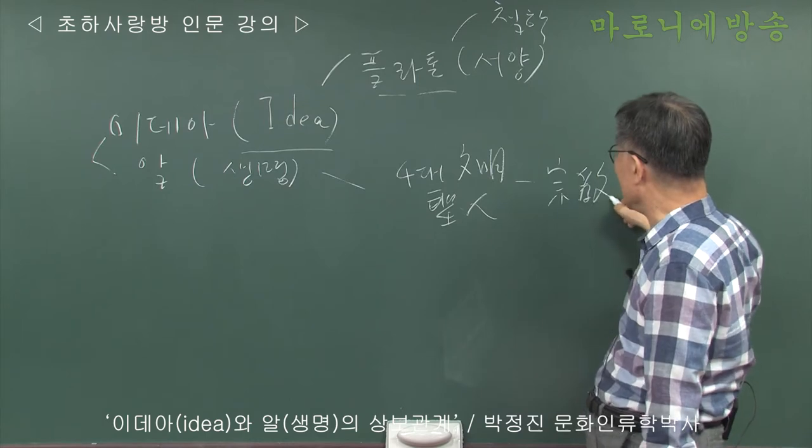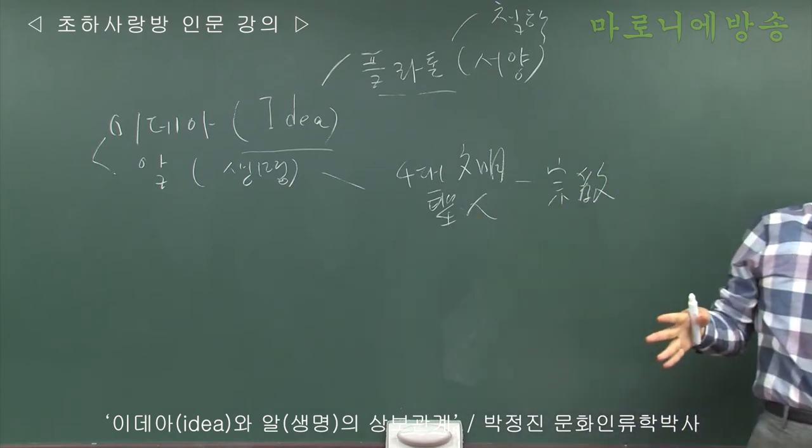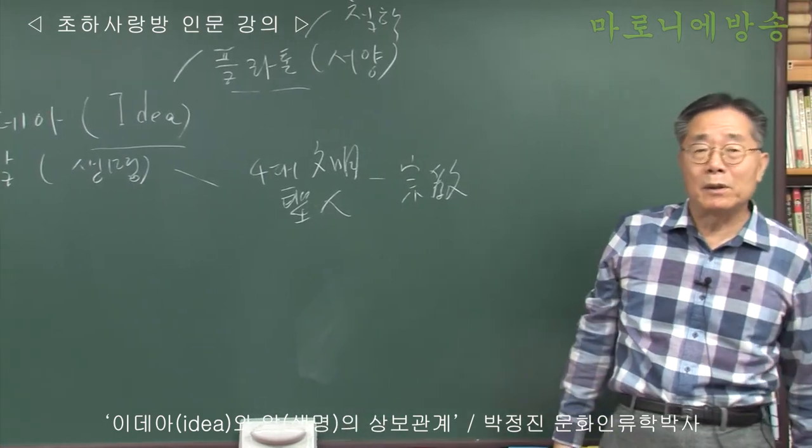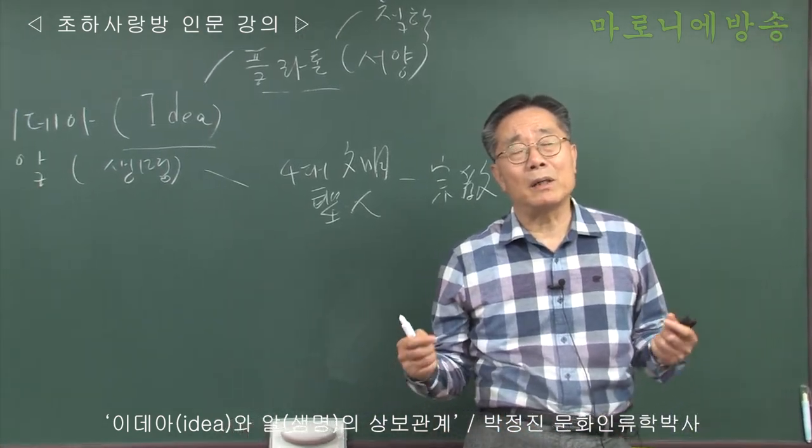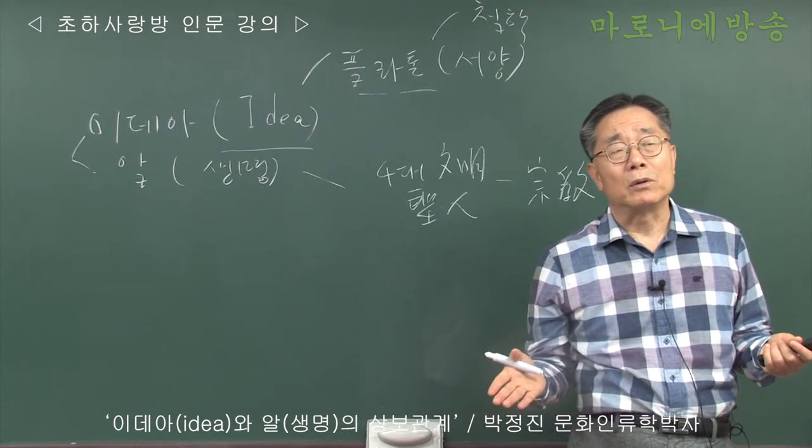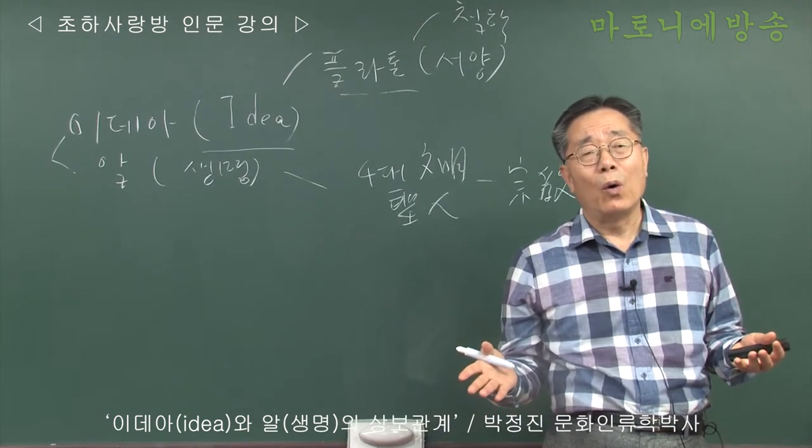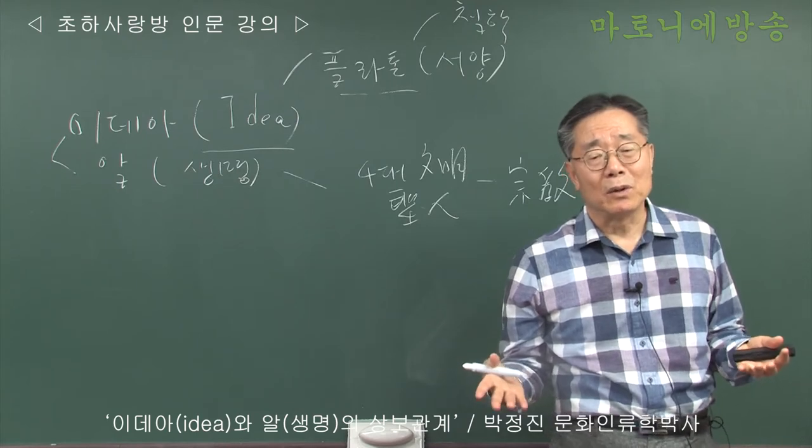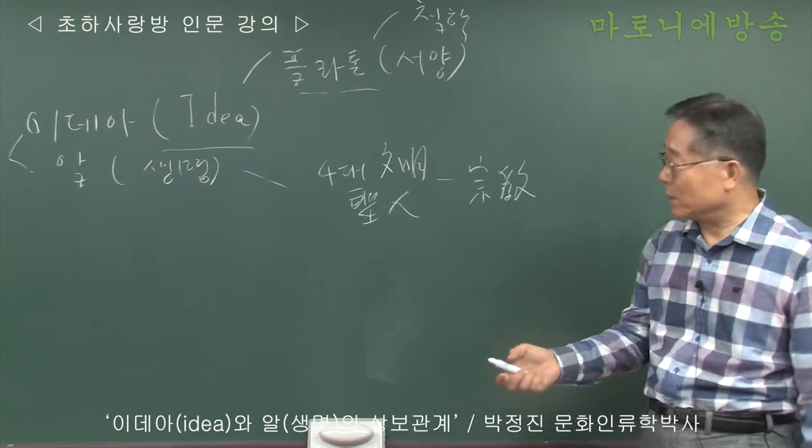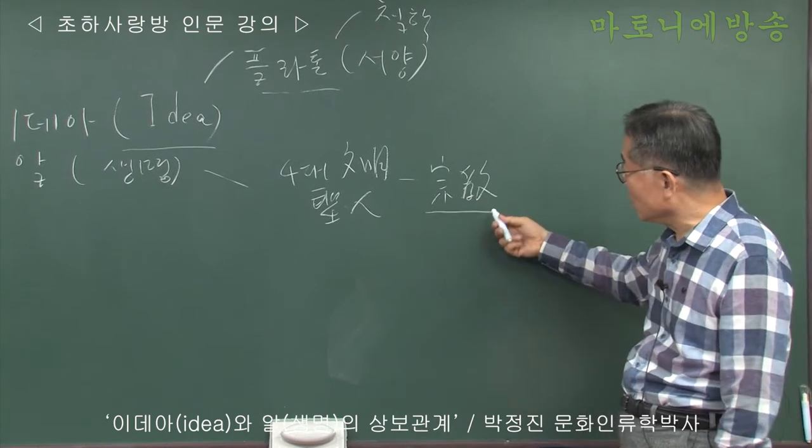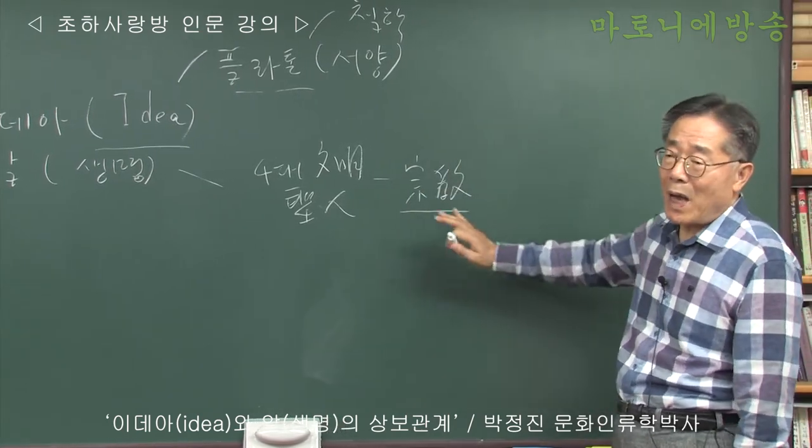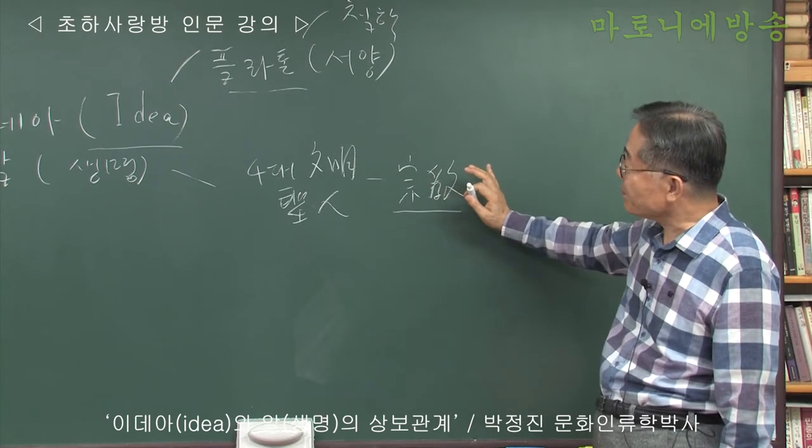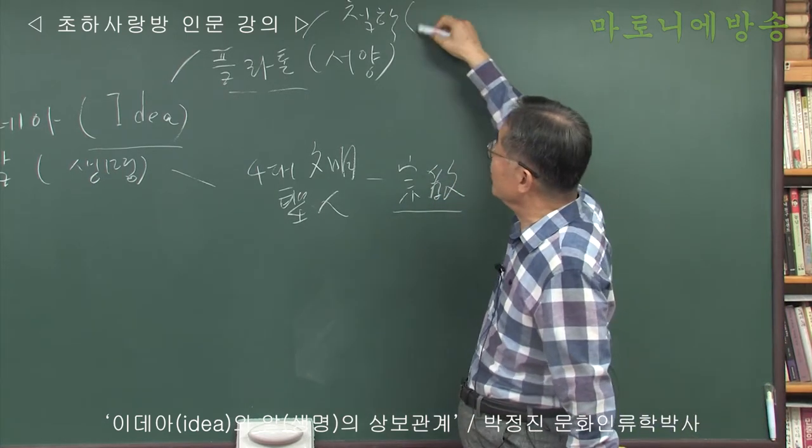과거에 인간의 가장 큰 공부거리 제공한 게 종교입니다. 그리고 대학들이란 것도 과거에 공부는 전부 종교, 사찰에서, 동양 같은 사찰에서 한다든지 무슨 도관에서 한다든지 그래요. 하여튼 종교에서 역시 공부도 했어요. 학교라는 게 종교단체와 관련되어 있었단 말이에요.